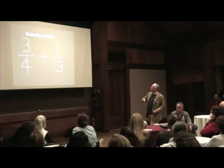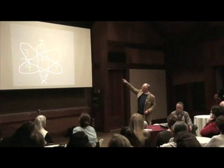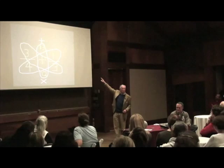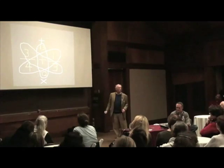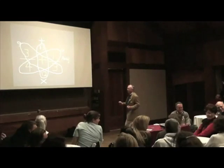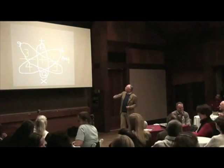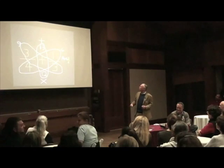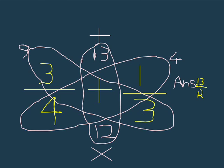So an American teacher will wind up with something like the butterfly method. You draw wings around like this, and you draw the body. There's a plus sign as a reminder on the top and the multiplication sign as a reminder on the bottom. You multiply along the wings and get four; multiply the other wing — three times three is nine. The plus sign: nine plus four is 13, you write it in the head. Four times three is 12, you write it in the tail. 13 twelfths — right answer.